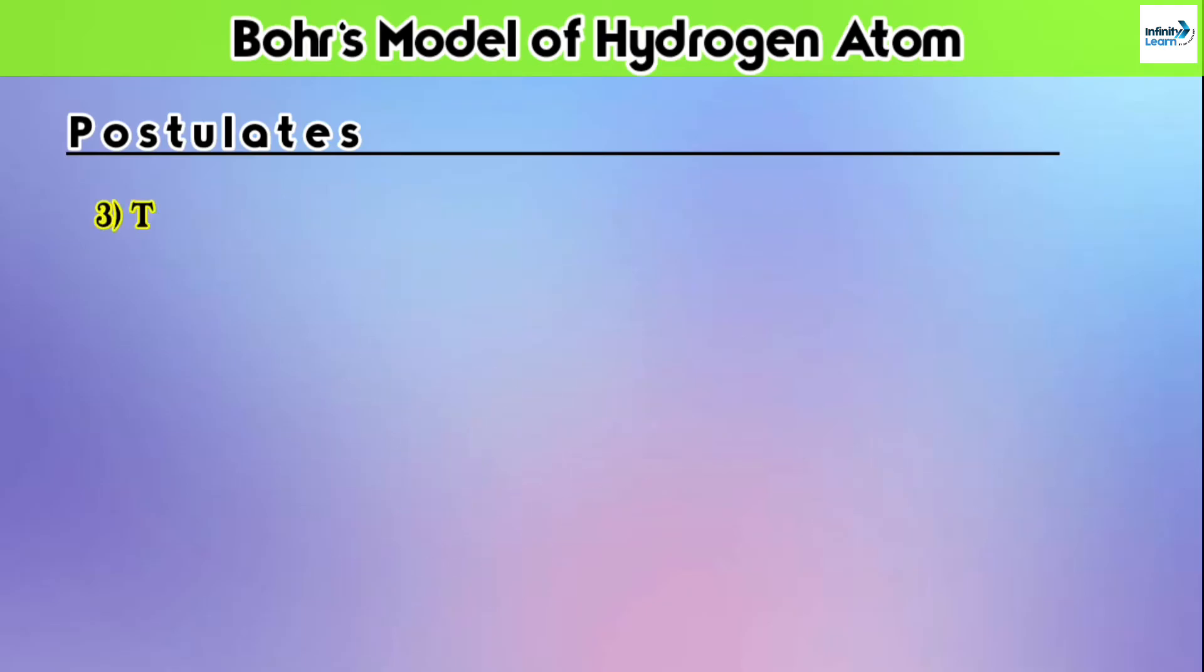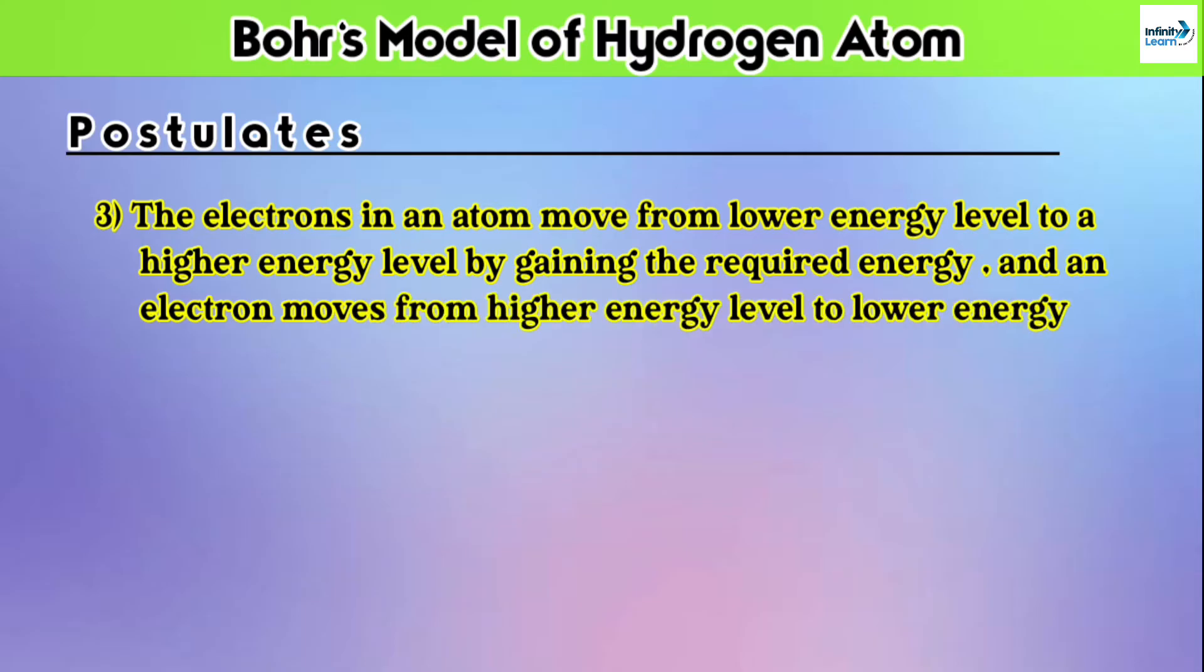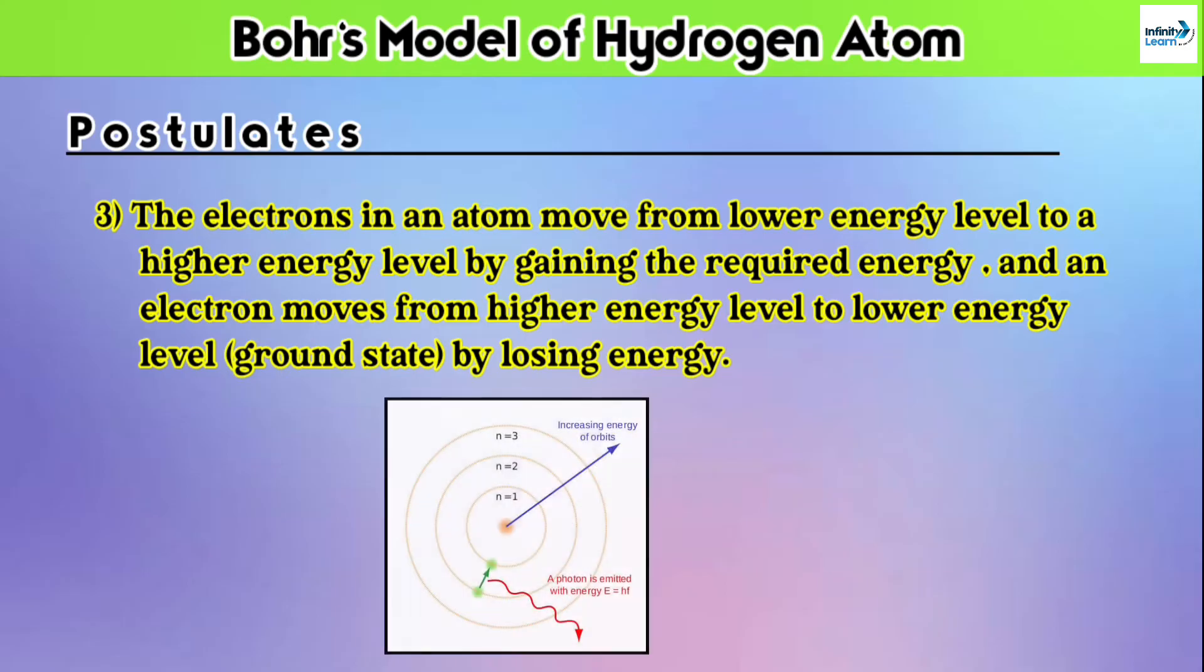The third postulate is: the electrons in an atom move from the lower energy level to the higher energy level by gaining the required energy, and an electron moves from the higher energy level to the lower energy level by losing its energy. It simply means that when an electron moves from lower energy level to higher energy level, it needs to gain the required energy and go into an excited state. Similarly, when it moves from the higher energy level to the lower energy level, it needs to lose a particular amount of energy and go into the ground state.